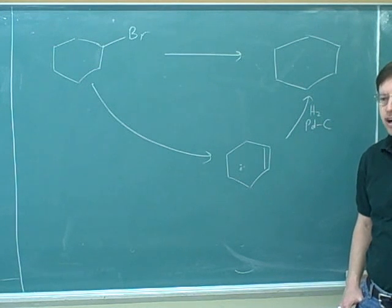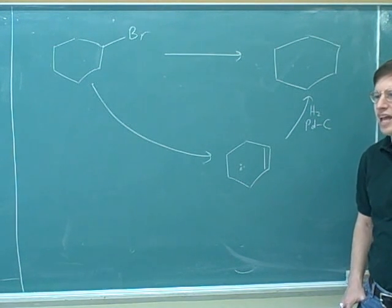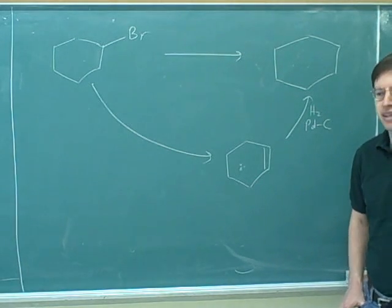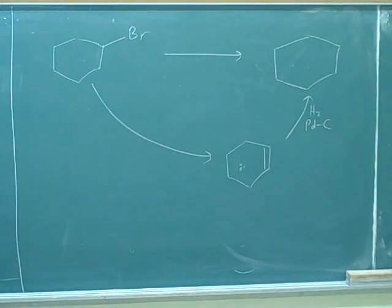Okay. The thing that almost always gives us E2 is strong, bulky bases. I gave you the handout on SN2 and E2, right? With the table? Yeah. Now we can take a look at that. Let's take a look at page three. The bottom of page three of the SN2, SN1, E2, and E1 handout. Now, if you look at the strong, bulky bases here, LDA and tributoxide, you can see they pretty much always give you E2. Pretty much guaranteed.